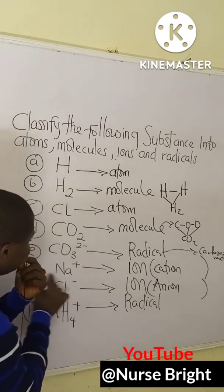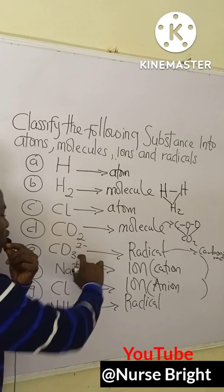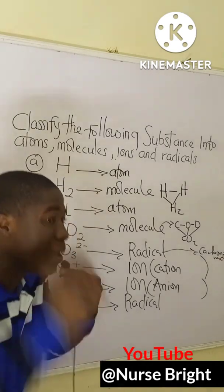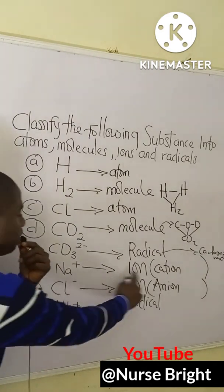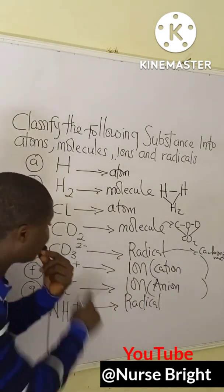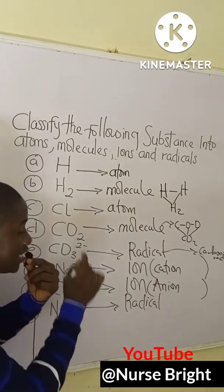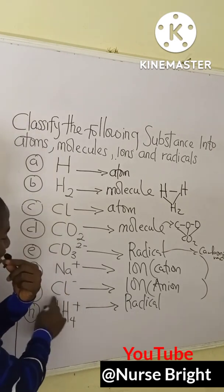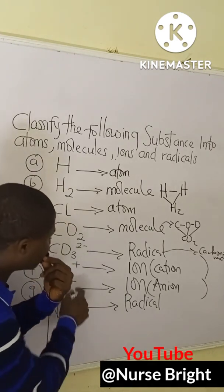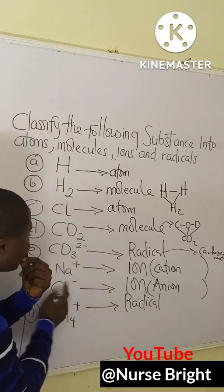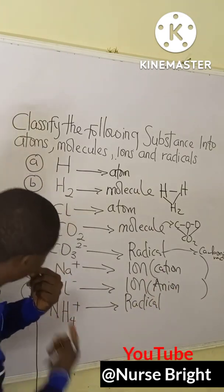Option F is sodium with a +1 charge. This is a sodium atom bearing a positive charge. A charged atom is simply called an ion; since it is positively charged, we specifically call it a cation. Option G is Cl⁻ — a chlorine atom bearing a negative charge — so it is an ion, specifically an anion.